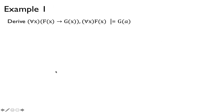Let's do an example. Suppose that it's true that for all x, f of x implies g of x, and for all x, f of x. Then we want to prove that g of a follows logically from those premises. One way to interpret this: if the domain is all animals, f of x means something is a frog, and if something is a frog it must be green, and everything is a frog, then certainly Albert is green, where a is any member of the domain.